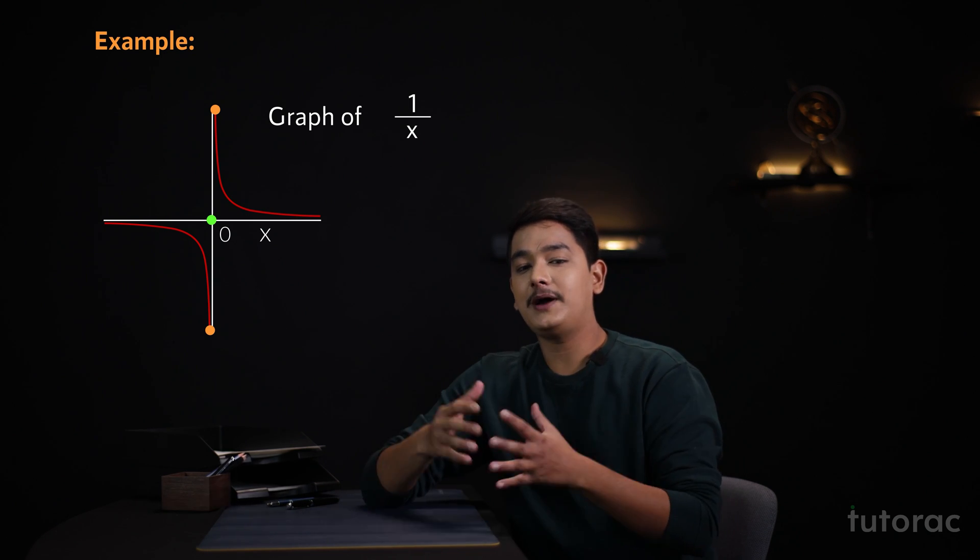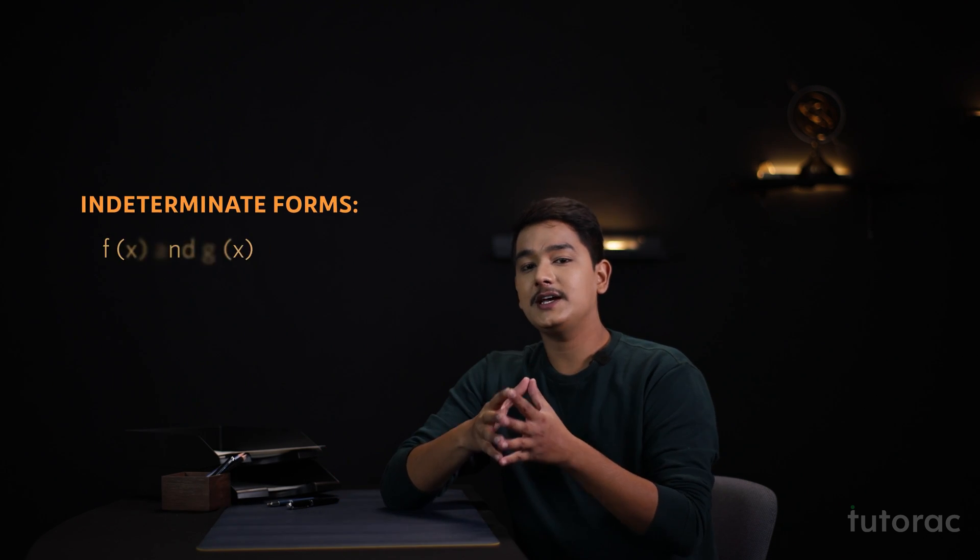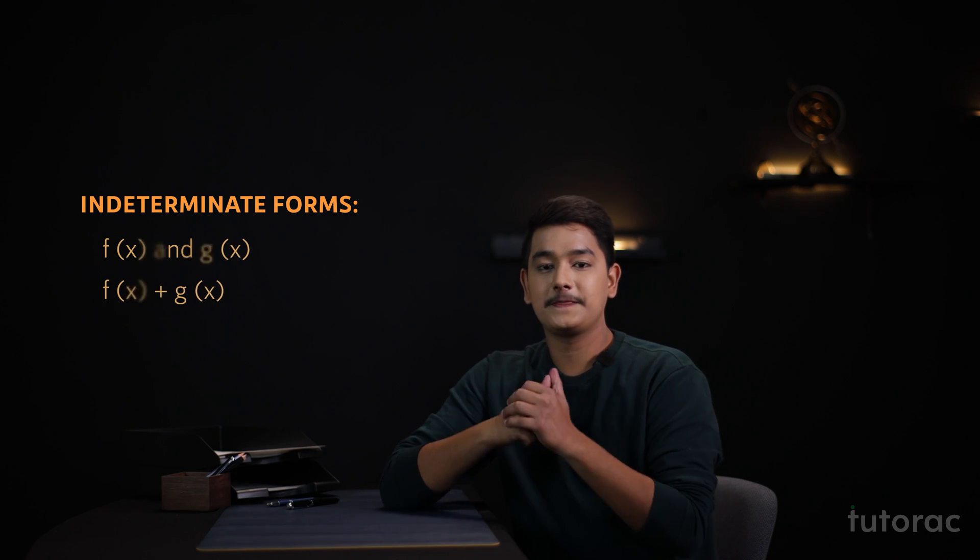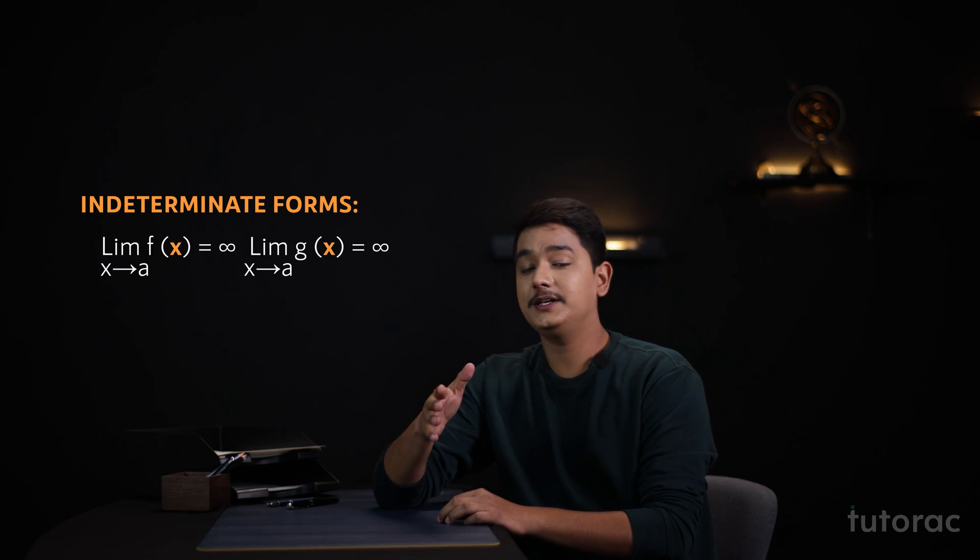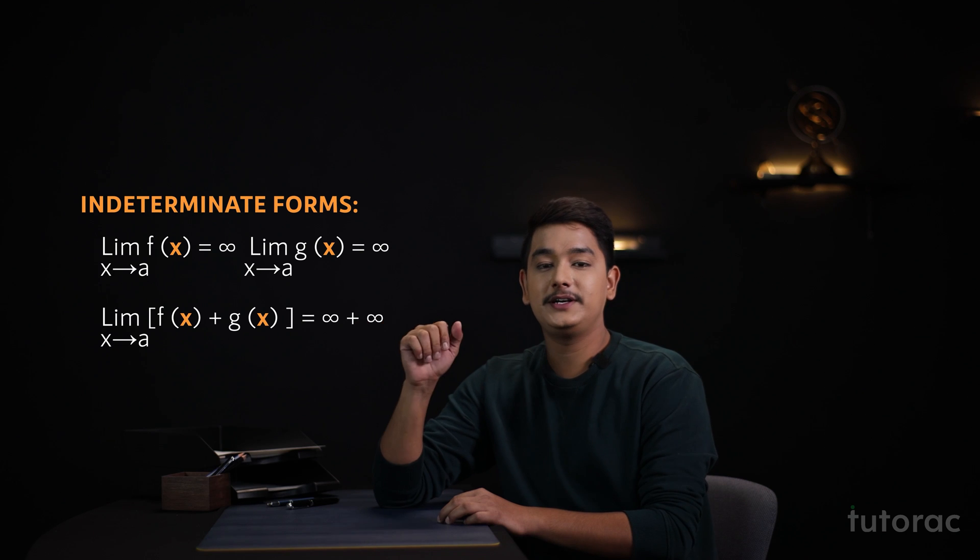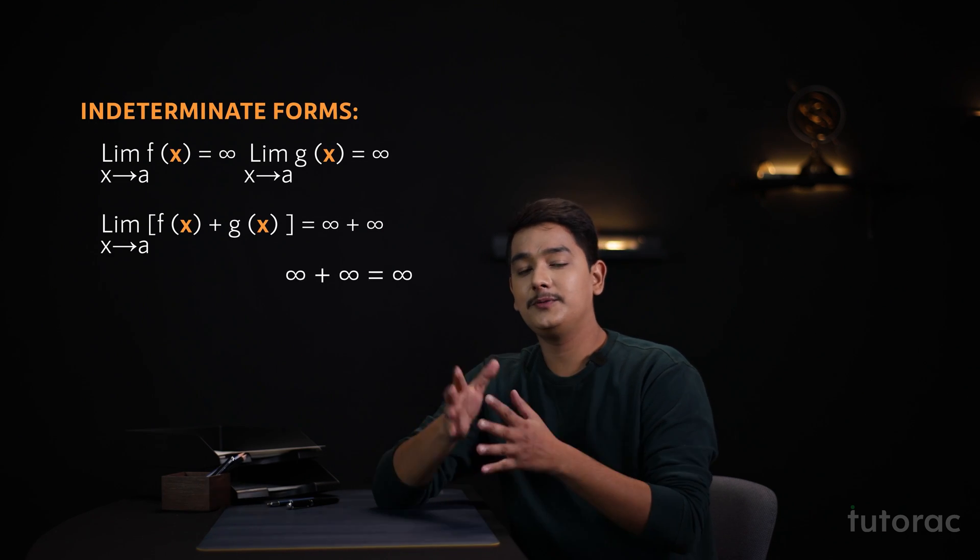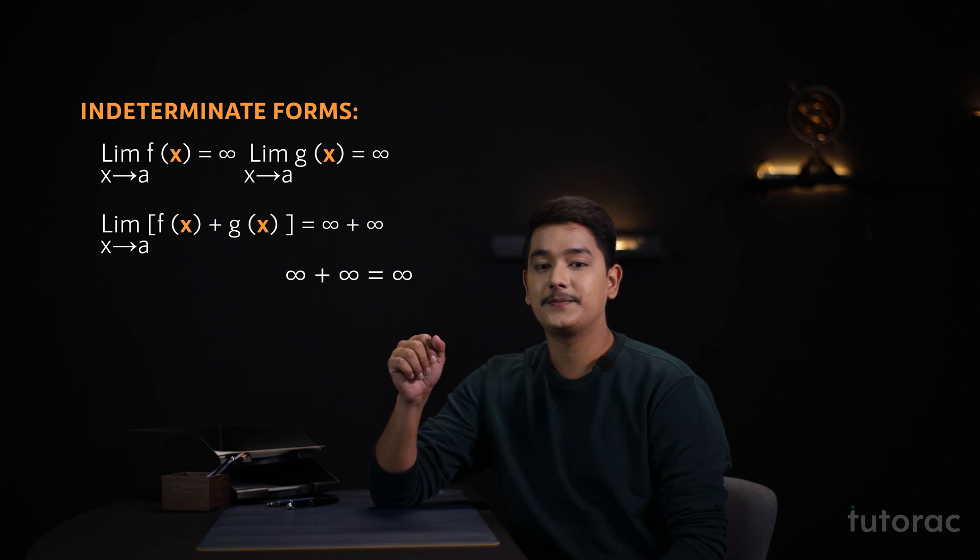Now let's come back to the main concept that is indeterminate forms. If we take two functions and they are being added and we have to find the limit of this function, suppose the limit of these functions are approaching to infinity, then we will get infinity plus infinity as our answer. Infinity plus infinity will be equal to infinity as they can be added. But,